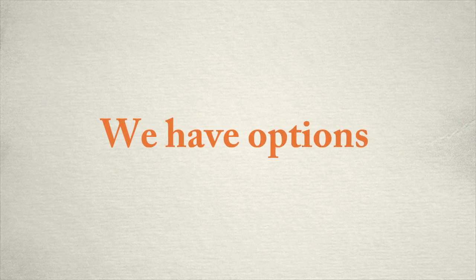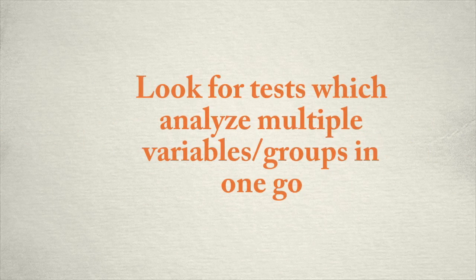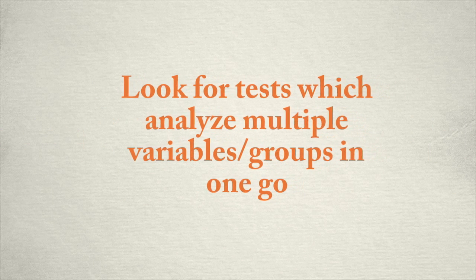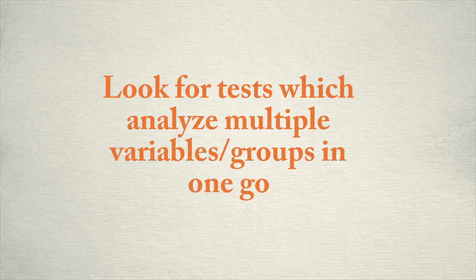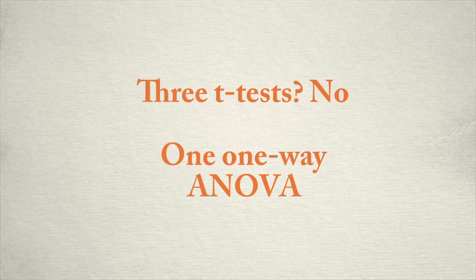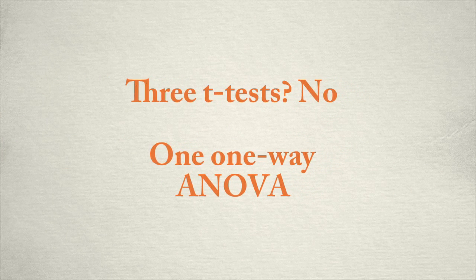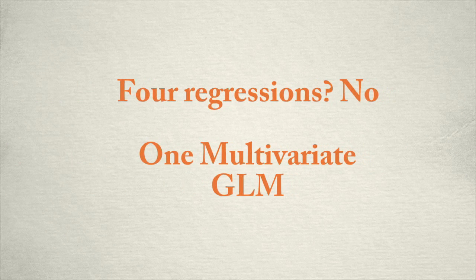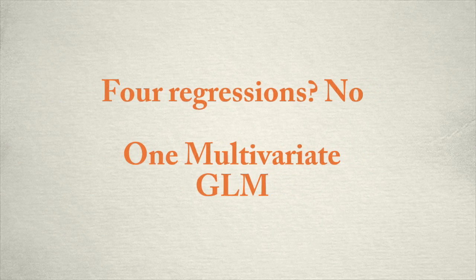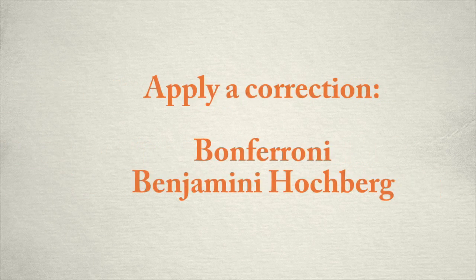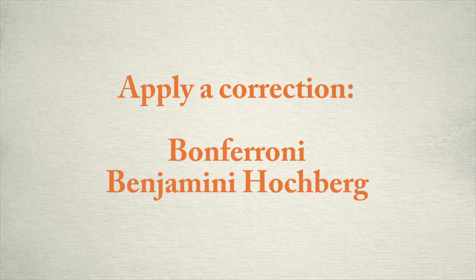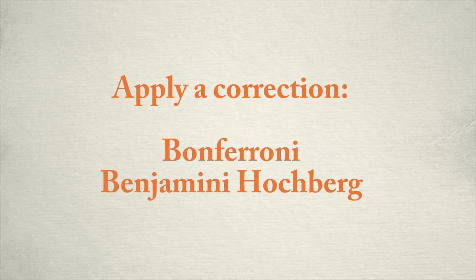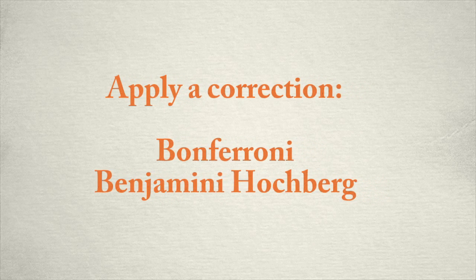We have options for avoiding the multiple comparisons problem. If the original analysis you were intending to use was a fairly simple one, you may be able to find analyses which consider multiple variables or groups all in one go. For instance, instead of doing three t-tests, you might complete one one-way ANOVA. Instead of running four regressions, you might just do one multivariate GLM. If you do absolutely have to do multiple comparisons, you can apply a correction to each of those comparisons. This might be something like a Bonferroni correction or a Benjamini-Hochberg.